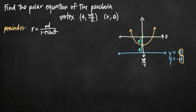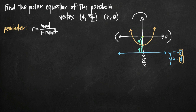So our value for d is 8 — that's what we're going to plug in for d into our equation. Now remember, this is the polar equation for a parabola when the parabola opens up like this, with the focus at the origin. If the parabola opened down, to the right, or to the left, we would have a different equation. But for one that opens up, we use the equation r equals e times d, where d is the value we just found, 8, which comes from the equation of the directrix. And e is eccentricity.